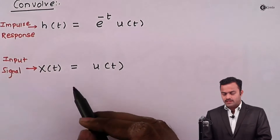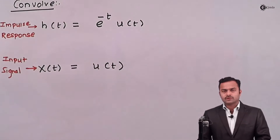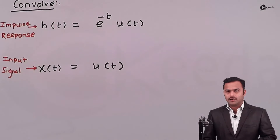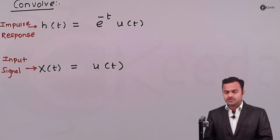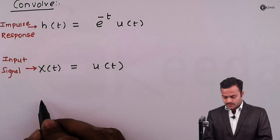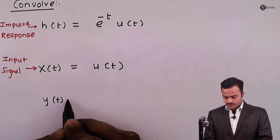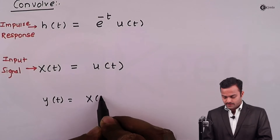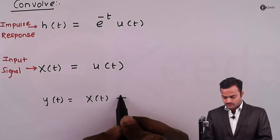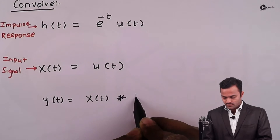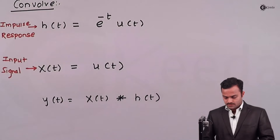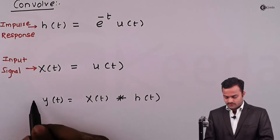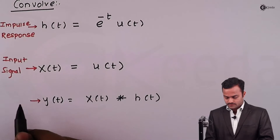With the help of these two signals we need to get an output by the convolution formula. We need to get y(t), which is x(t) convolved with h(t), and y(t) is our output signal.